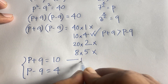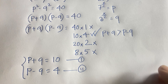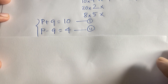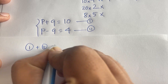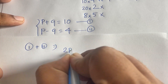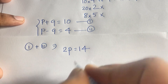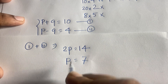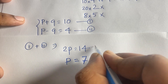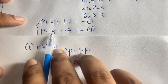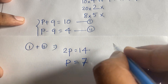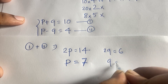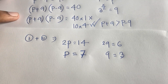Adding the two equations: p + q = 10 and p - q = 4, we get 2p = 14, so p = 7. Subtracting the equations gives 2q = 6, so q = 3.